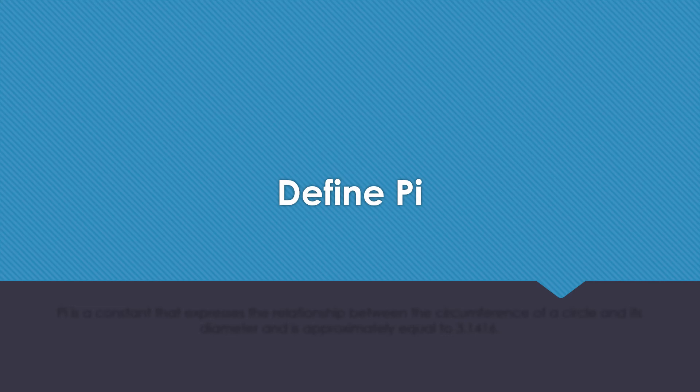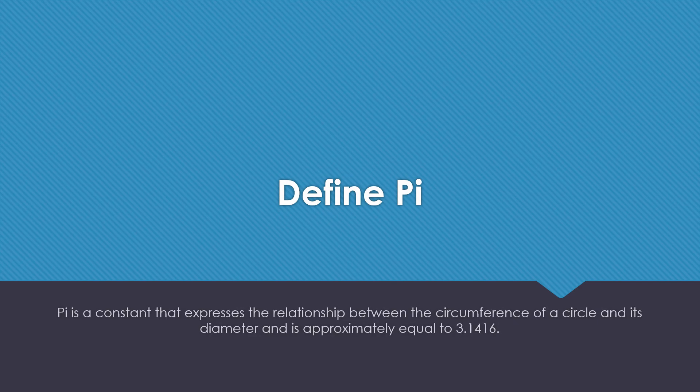Define pi. Pi is a constant that expresses the relationship between the circumference of a circle and its diameter. It is approximately equal to 3.1416.